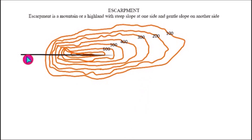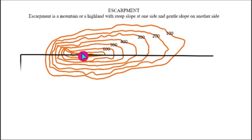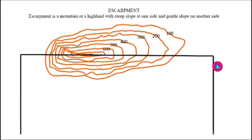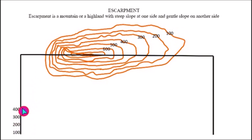First, you draw your horizontal line to cut across all the contours. This horizontal line must always go through the last or middle contour. Then you draw a vertical line at the left side and another vertical line at the right side. After that, you mark the vertical side at the left according to the calibration of the contour — from 100 to 800: 100, 200, 300, 400, 500, 600, 700, and the last contour, 800.